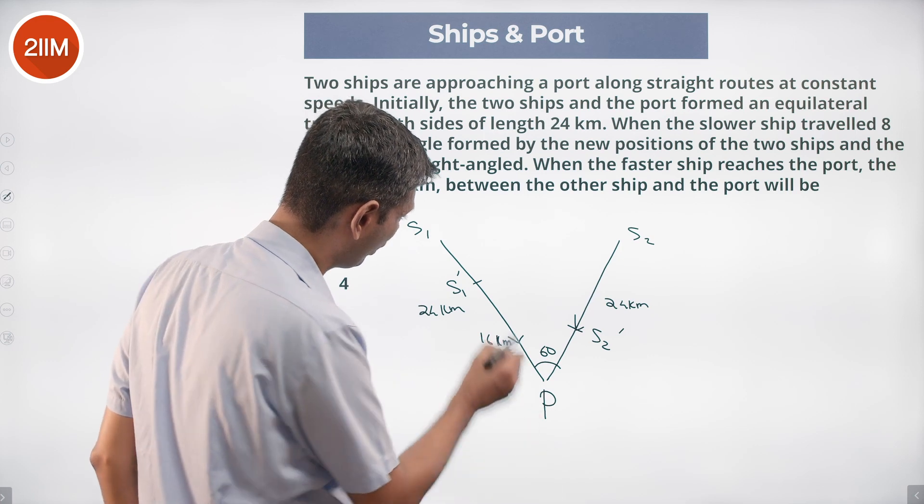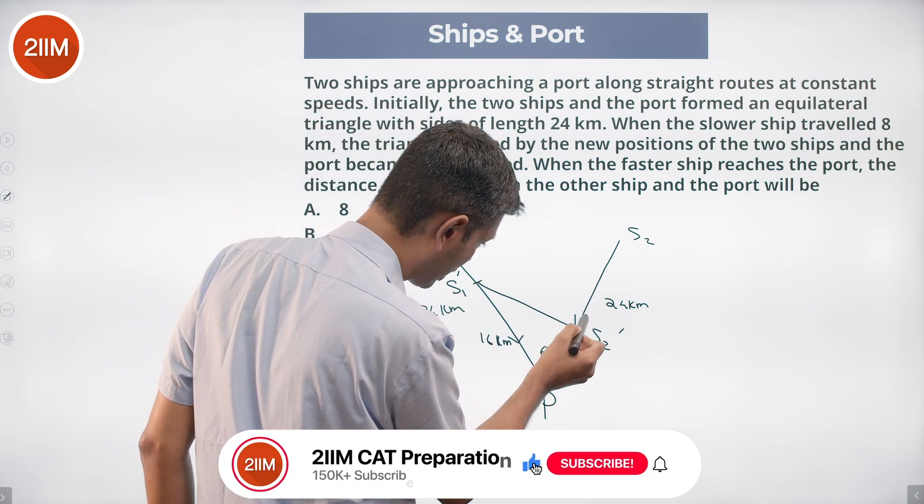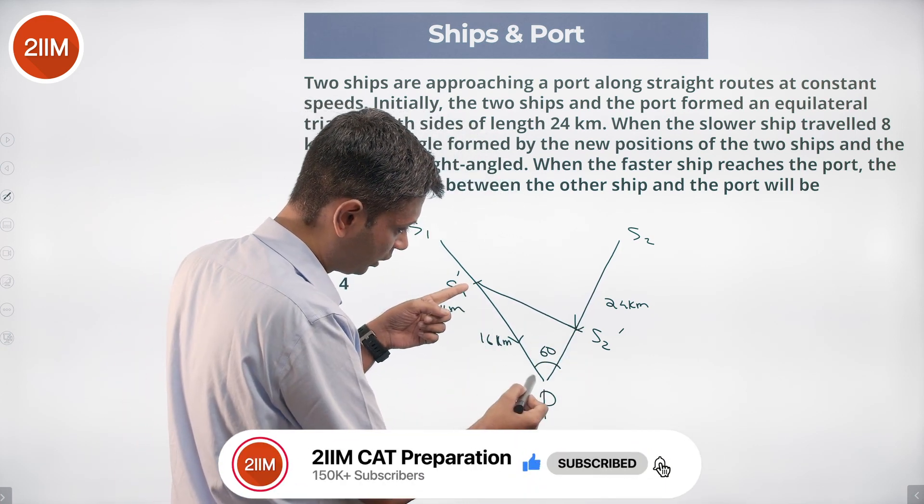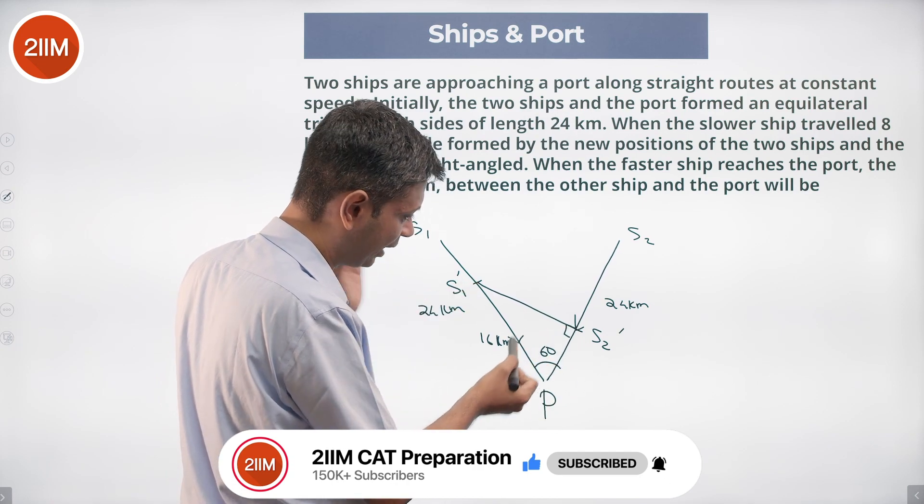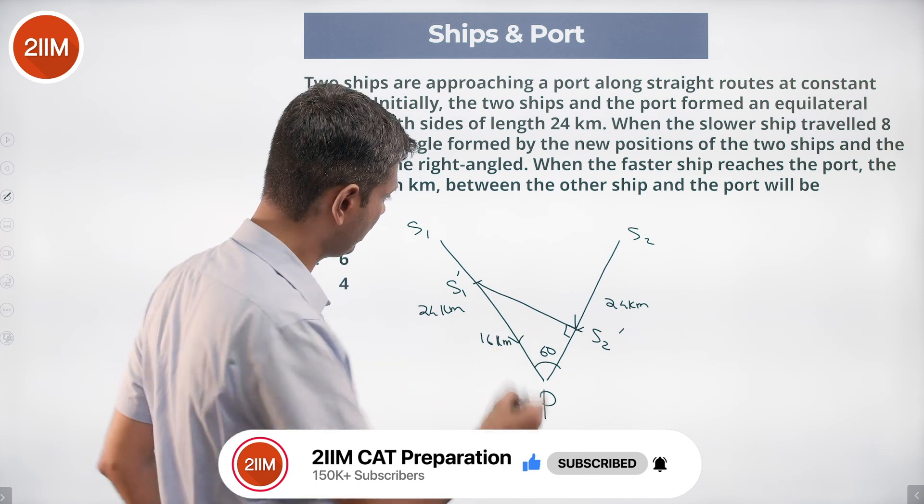I'm joining s1 dash, s2 dash, and p. This should be longer, this is shorter. This should be the right angle, this cannot be a right angle. This is right angle, this is 60, this is right angle, 30.